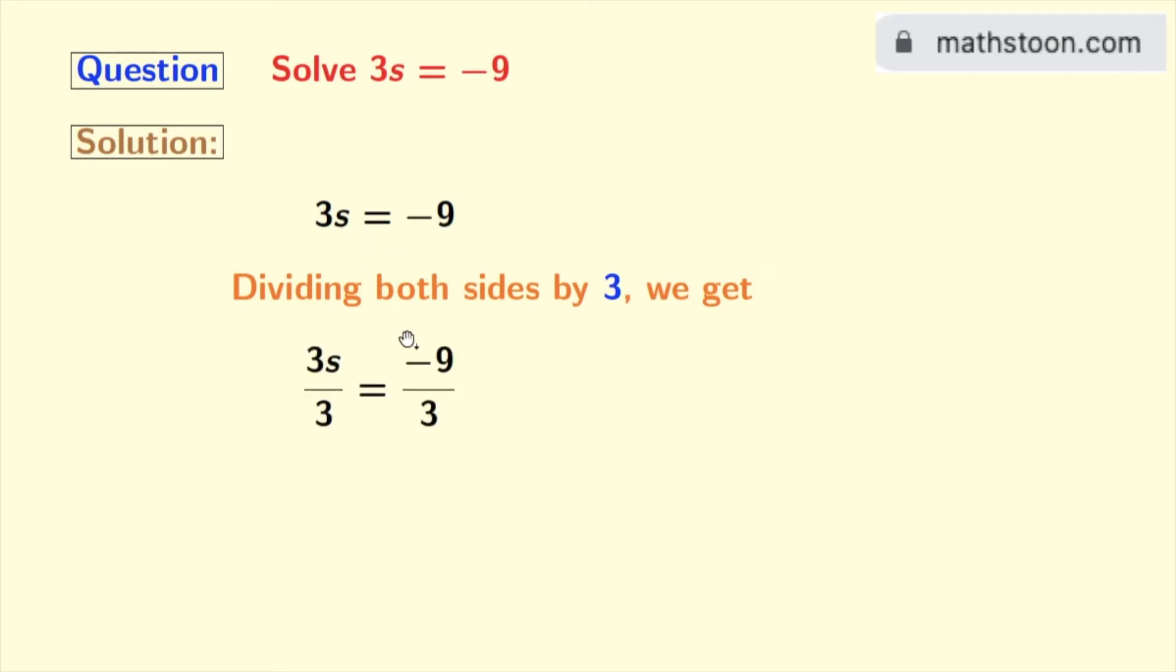Doing that, we get 3s by 3 is equal to minus 9 by 3. Look, in the left-hand side, 3 gets cancelled and we are left with s. And in the right-hand side, as 9 by 3 is 3, so we get minus 3.